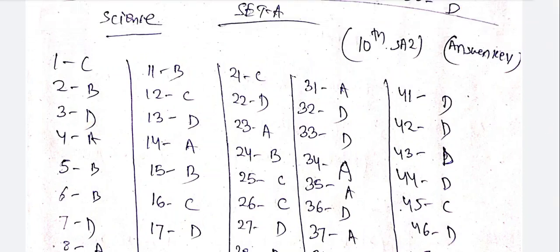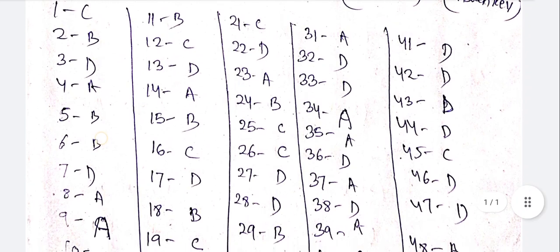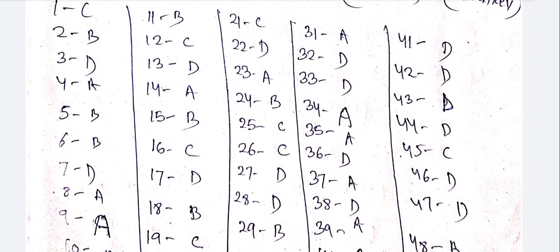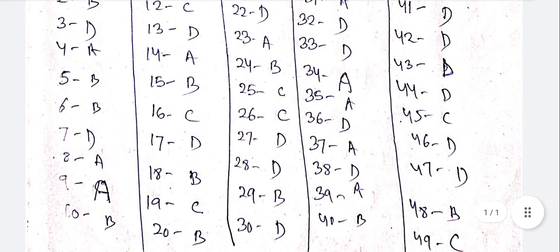Set A, which is Set A for 10th grade Summative Assessment 2, Science. The answer is — if you see the answer, you don't want to see the answer. So, how do you expect that?